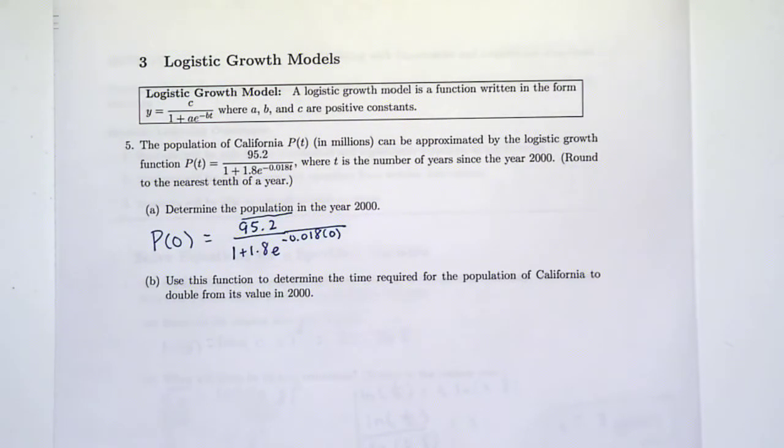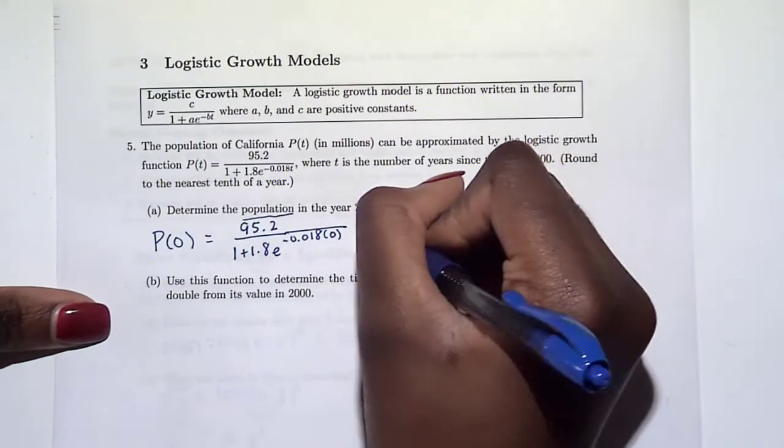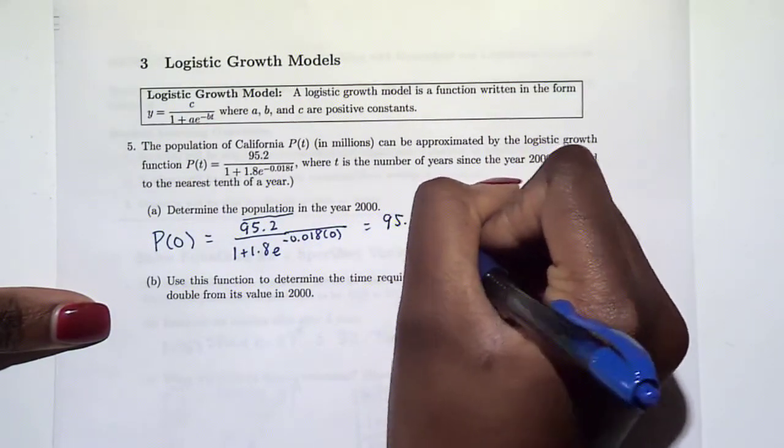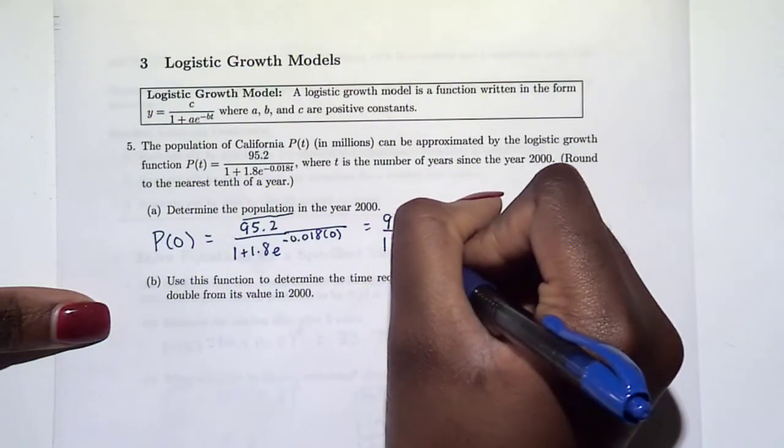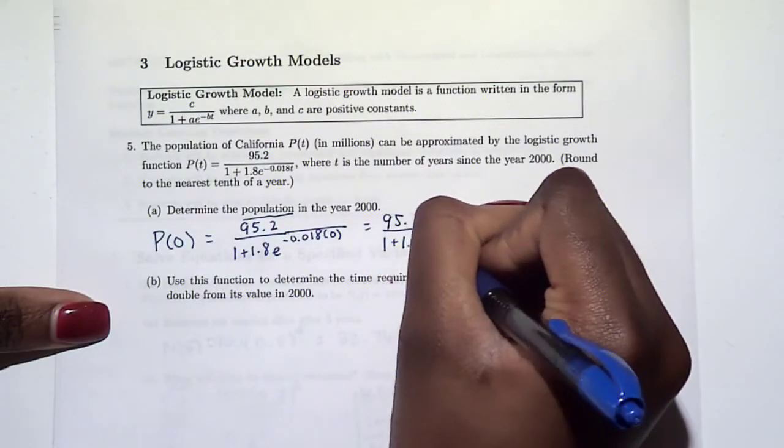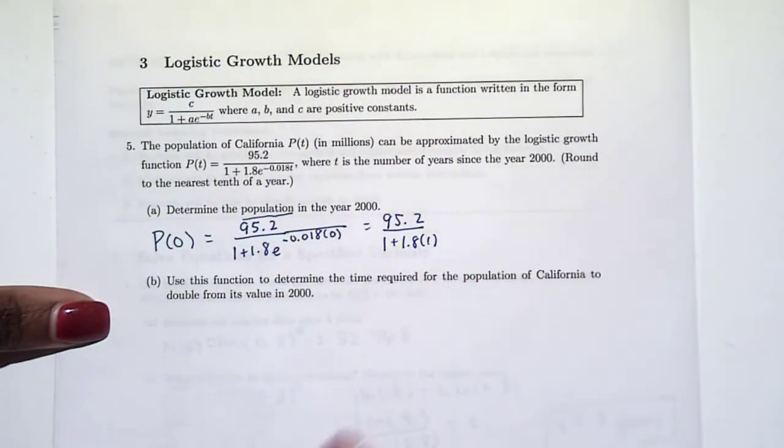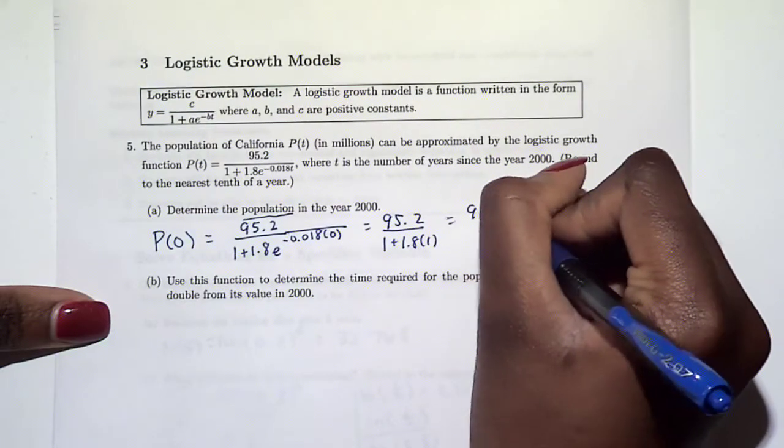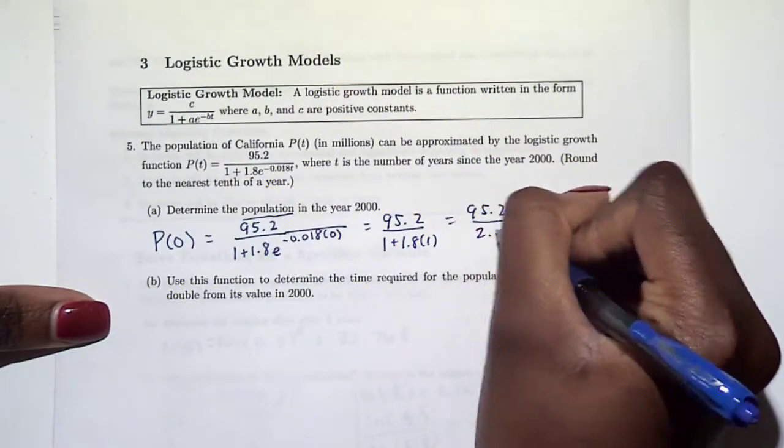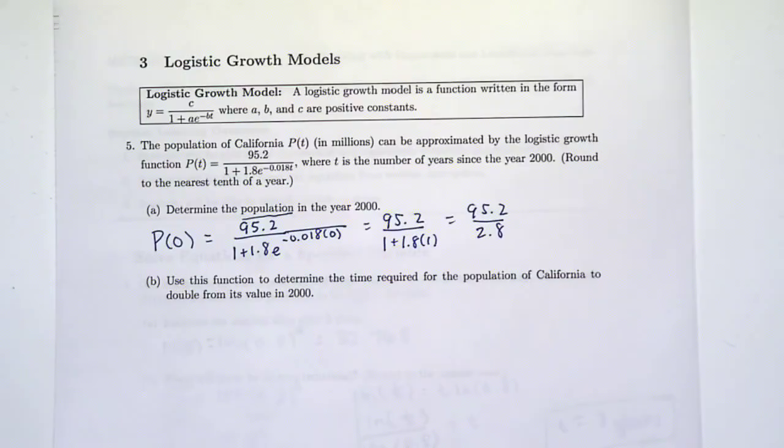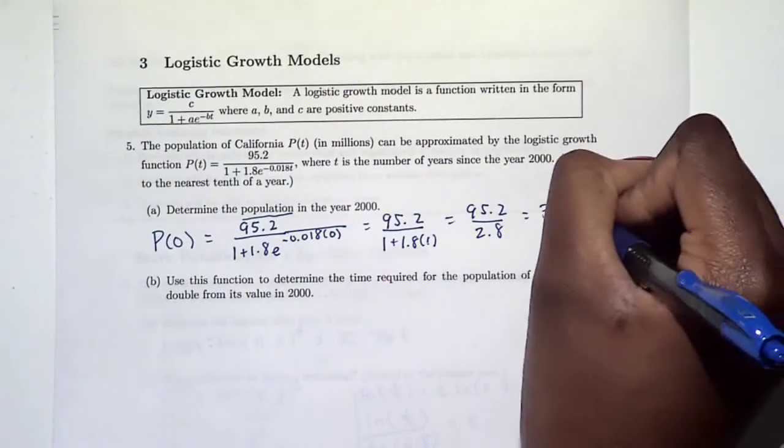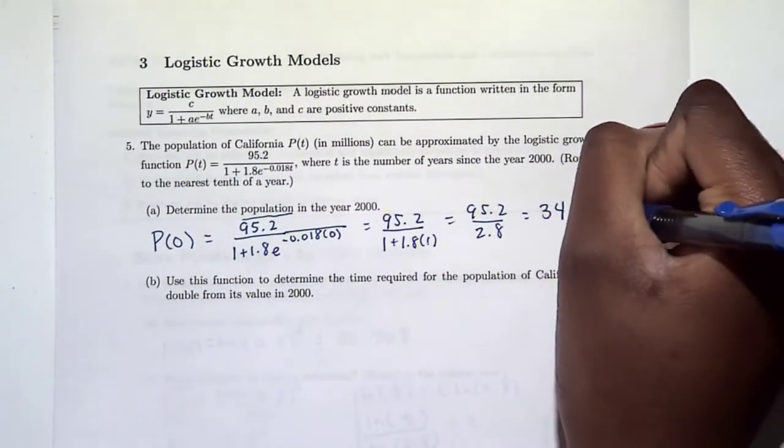Anything raised to the 0 is just 1. When we divide these two, we should get 34, and our answer is in millions. So the population is 34 million people in California in the year 2000.